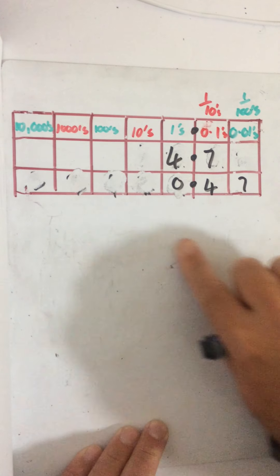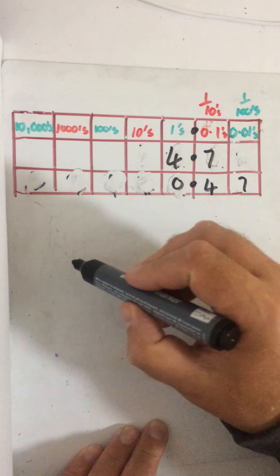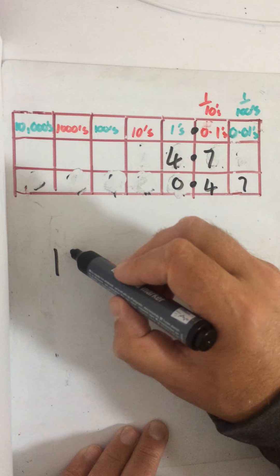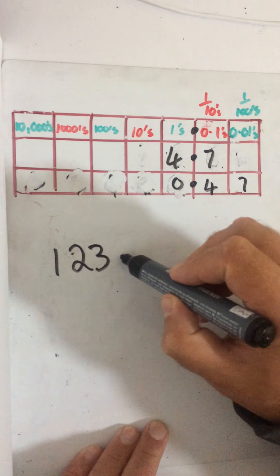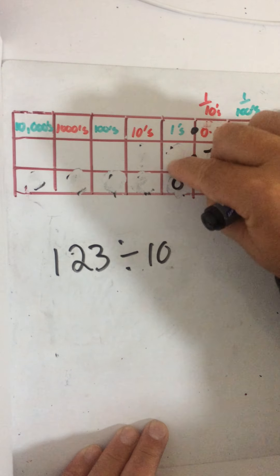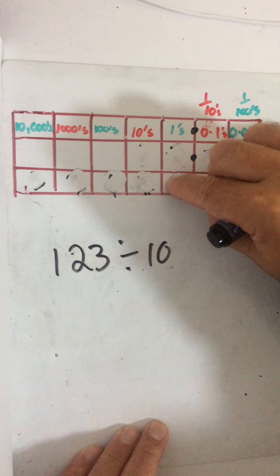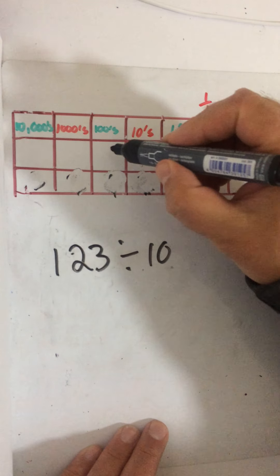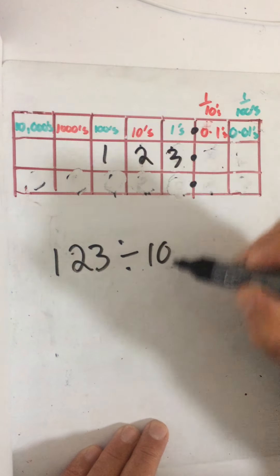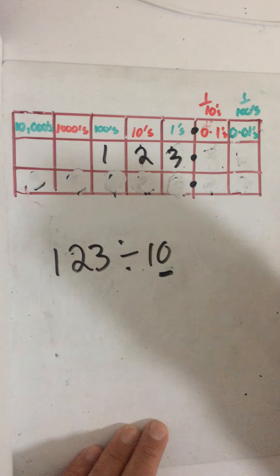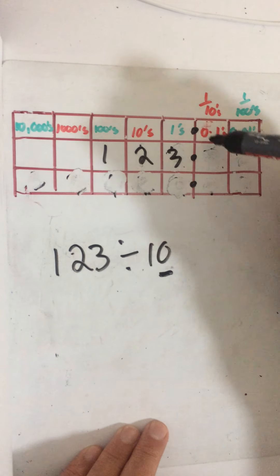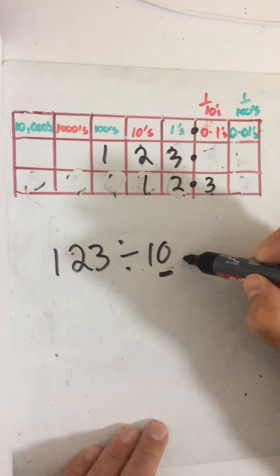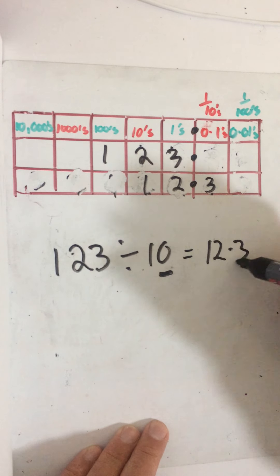Say for example I've got 123 and I'm dividing that by 10. I put my 123 in the grid and I'm dividing by 10 — 10 has one zero, so I'm going to move all the numbers one place to the right, making them smaller. So the three goes one place, then 2 and 1 — it becomes 12.3.